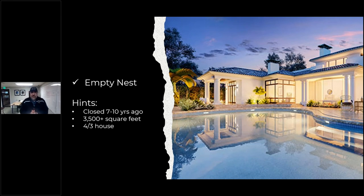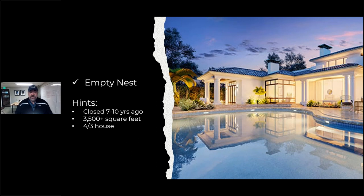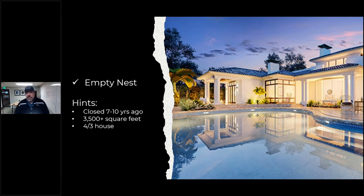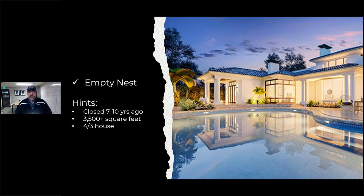Empty nesters — here's a great one that people never think of. Go into the MLS and look for homes that closed seven to ten years ago. People move every seven to ten years, but you're specifically looking for big houses — 3,500 to 4,000 square feet, four bedrooms, three baths. If that house closed seven years ago, it was probably a big family. Now all their children are seven years older. Good chance the owners are thinking they need to downsize — the kids were 12 and 16, now they're in college and gone. Look for those old big houses; those people may be interested in downsizing.